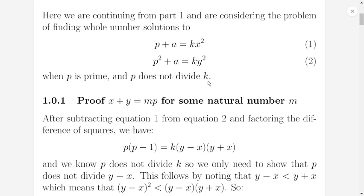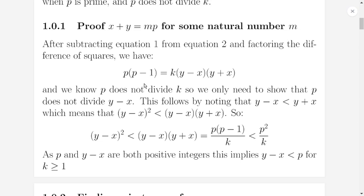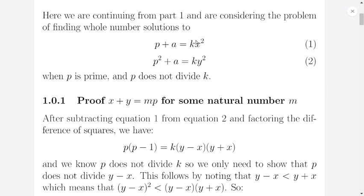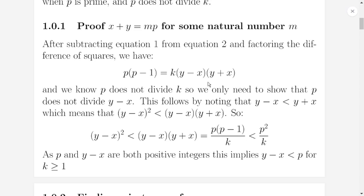So I started by considering the problem of finding whole number solutions to p plus a equals kx squared, p squared plus a equals ky squared, when p is prime and p does not divide k. And if p does not divide k, when we subtract these two equations, we're going to get this thing here. p times p minus 1. The a's are going to cancel out. And we're going to get k times y squared minus x squared, which we can factor with y minus x, y plus x. So we get this equation.